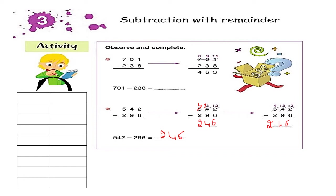But to borrow 1 from the 0, we cannot borrow 1 from the 0. So first of all we have to borrow 1 from the 7 here — that becomes 6 — and put it beside the 0 to become 10. Then again we borrow 1 from the 10, and put it beside the 1 to get 11. The 10 becomes 9 because we borrowed 1 from it. Then we start the operation: 8 subtracted from 11 is 3, 3 subtracted from 9 is 6, and 2 subtracted from 6 is 4. So the final answer is 463.